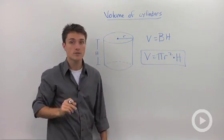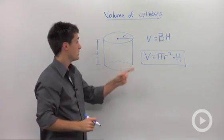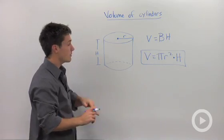So to calculate the volume of a cylinder, you only need to know two things: the radius and the height of the cylinder.